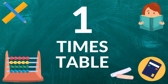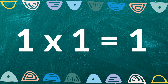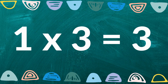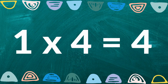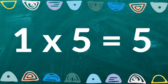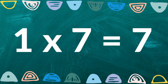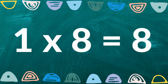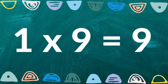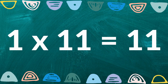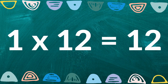One times table. One times one is one, one times two is two, one times three is three, one times four is four, one times five is five, one times six is six, one times seven is seven, one times eight is eight, one times nine is nine, one times ten is ten, one times eleven is eleven, one times twelve is twelve.